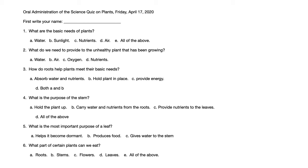Number 2. What do we need to provide to the unhealthy plant that has been growing? A. Water. B. Air. C. Oxygen. D. Nutrients.